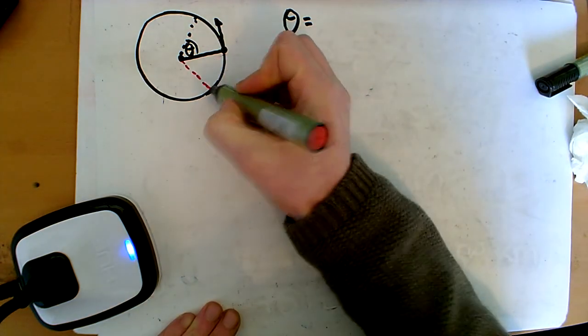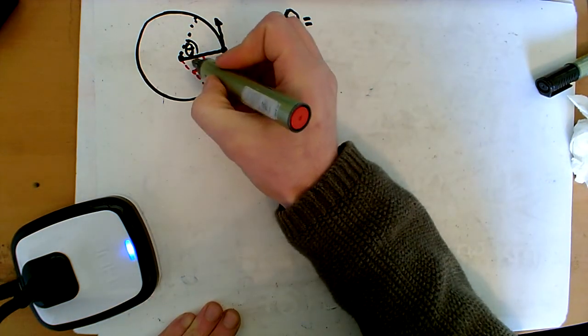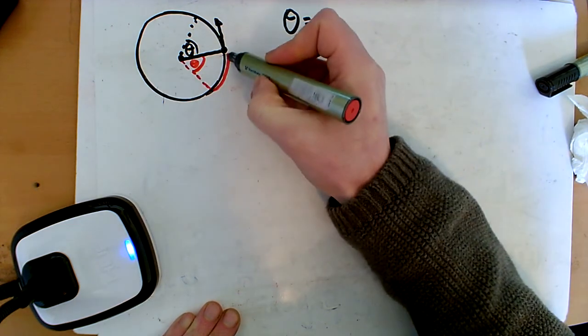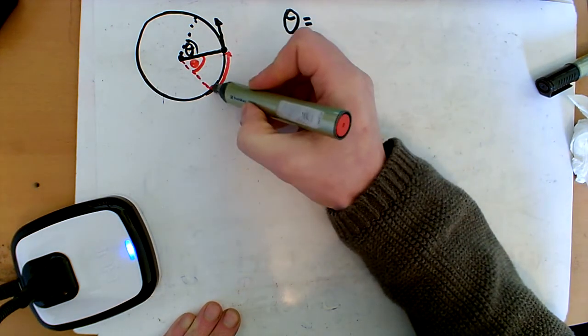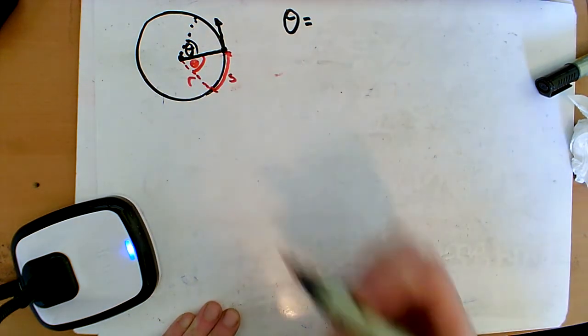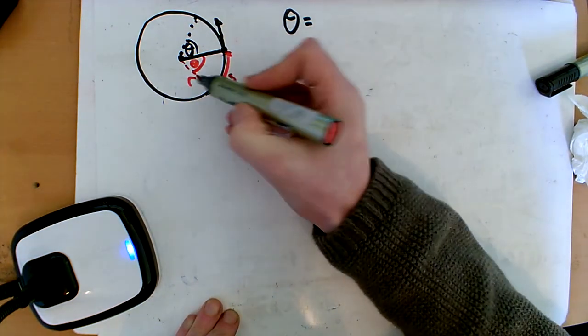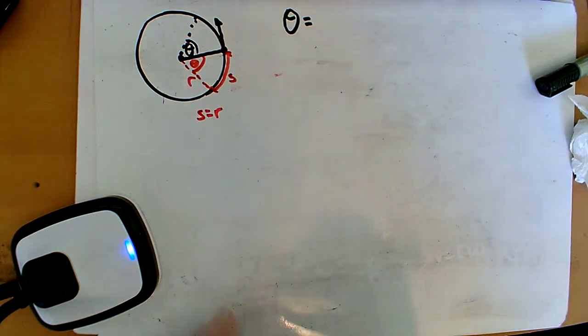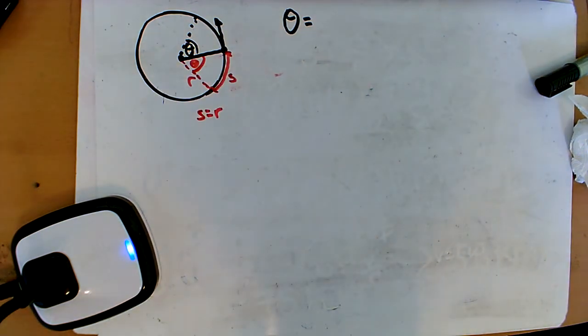So if we looked out here, the one theta, if it was one radian, would be basically when we have one radius length of an arc length over there. So when this arc length, between here and here, which we call S, is the same as R, the same length as radius. When S is equal to R, that means inside here, the angle is a radian.